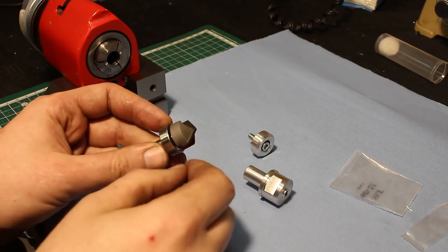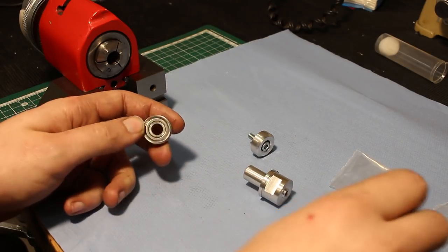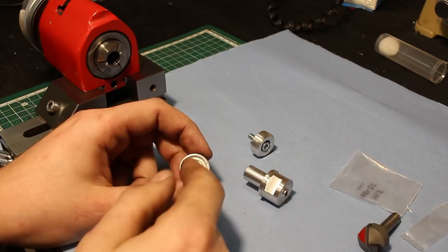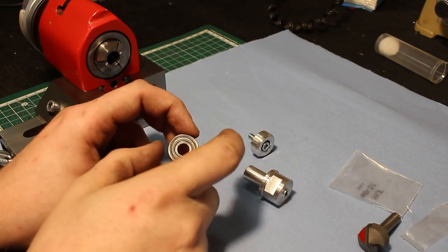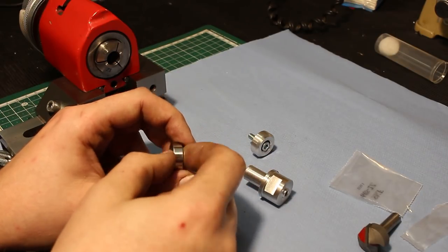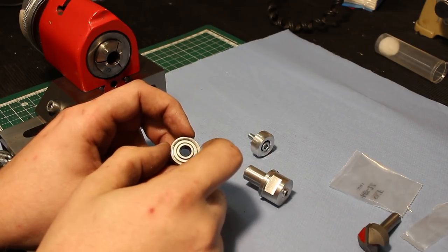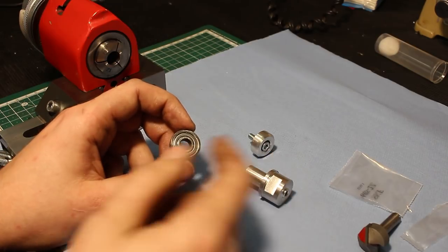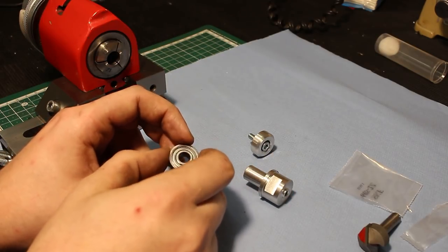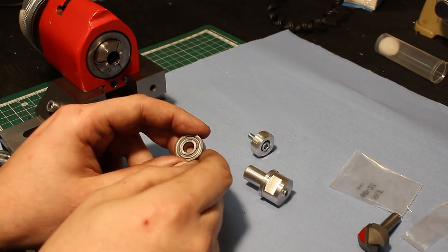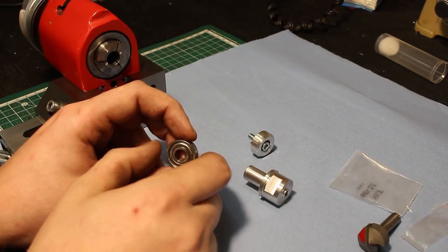First I wanted to take a smaller bearing and put a bushing on the outside that I could machine to size, but I figured out that I could grind down the OD of our standard bearing by 0.5 millimeters. It shouldn't do any harm to the bearing itself.